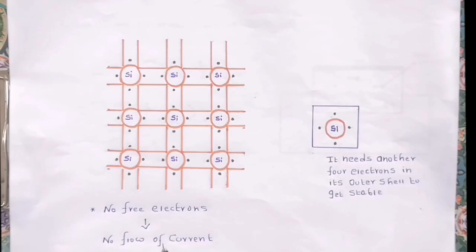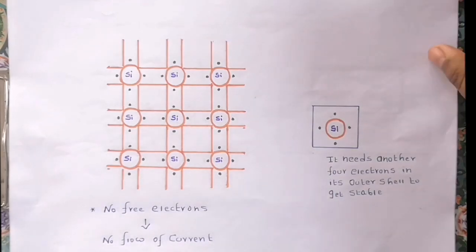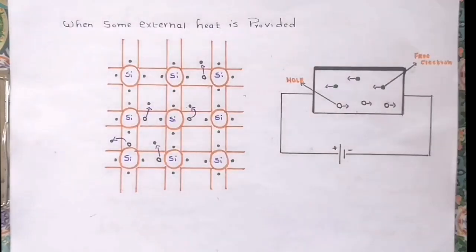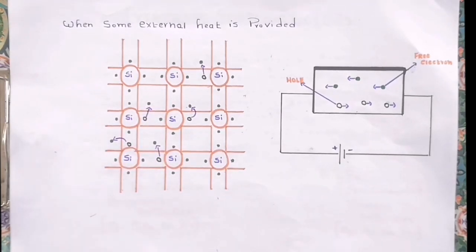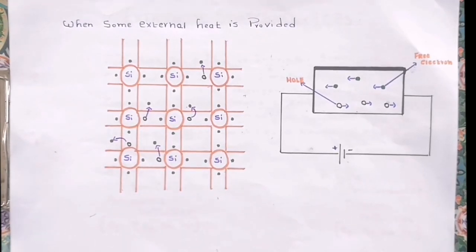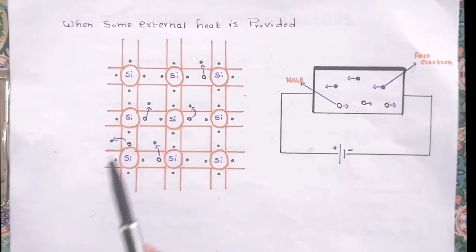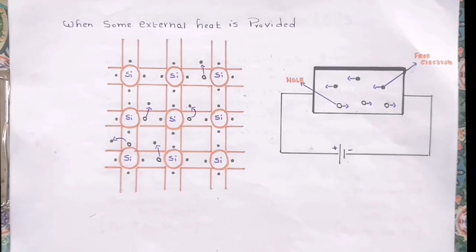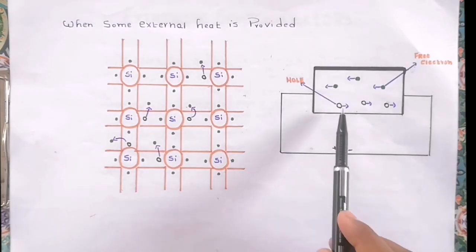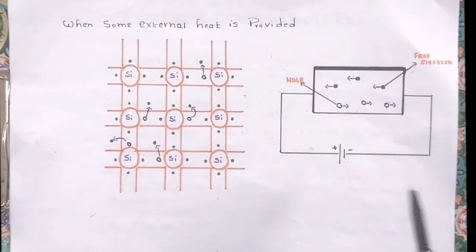So if we want to increase the conductivity of this crystal lattice, we have to increase its temperature or provide external heat. When external heat is provided, these electrons gain sufficient kinetic energy and leave their position by creating a hole. If we increase the temperature, the number of free electrons available will also increase, and as free electrons increase, conductivity also increases.